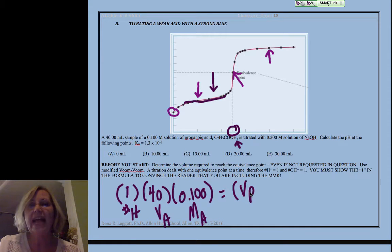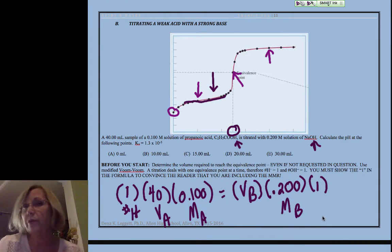We have 0.200 M base, and sodium hydroxide has one hydroxide or ability to accept one proton. If you solve for the volume of base, it's 20 milliliters.